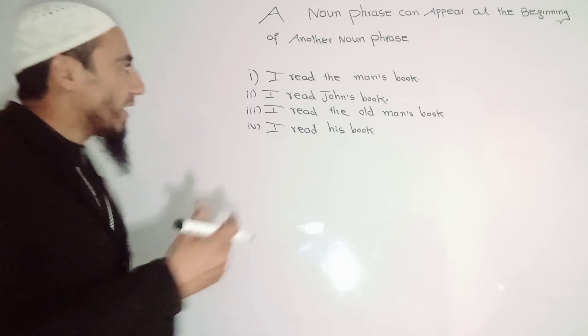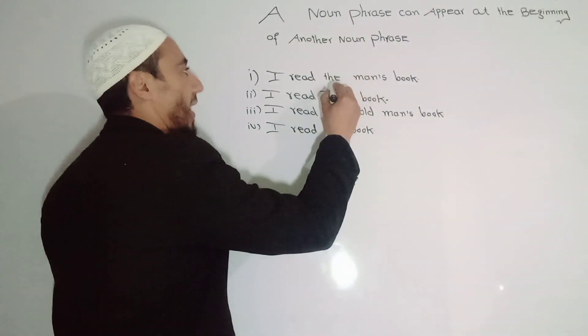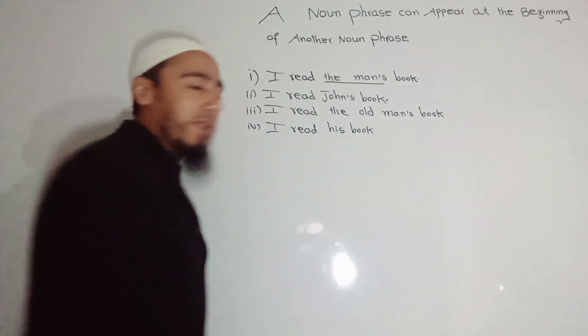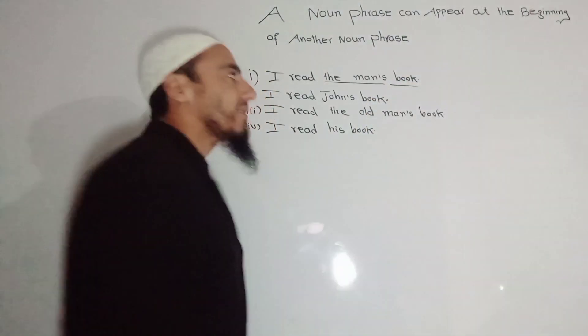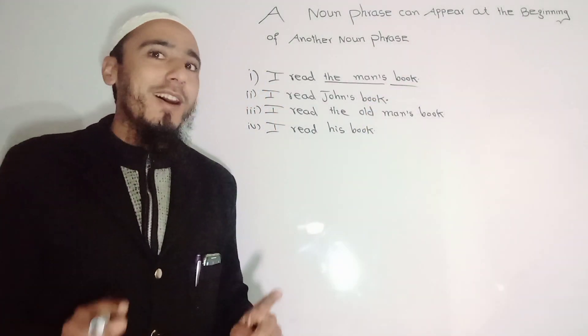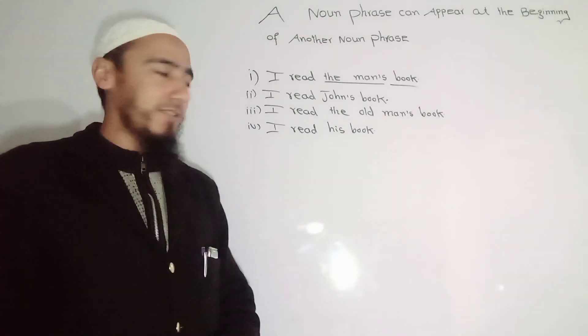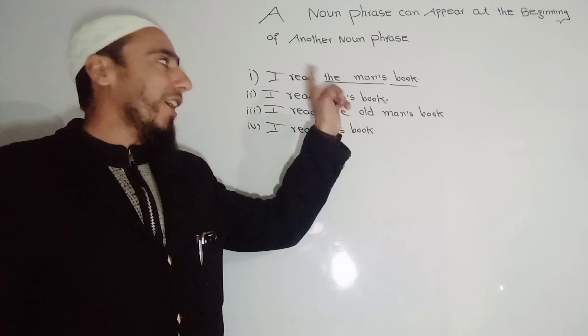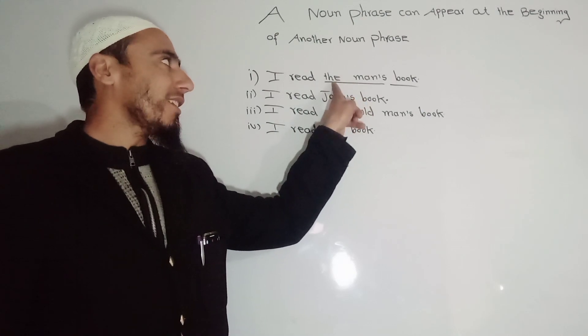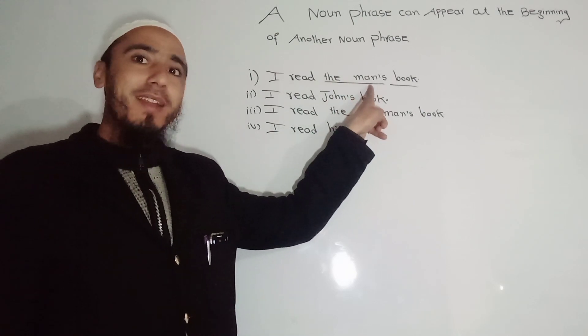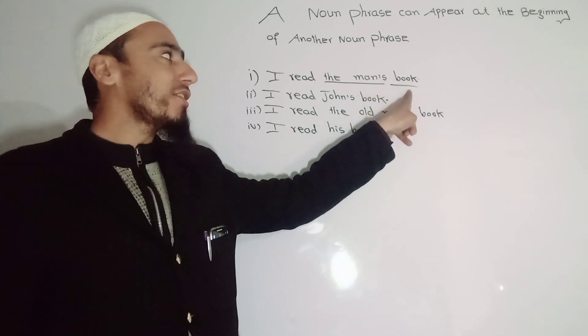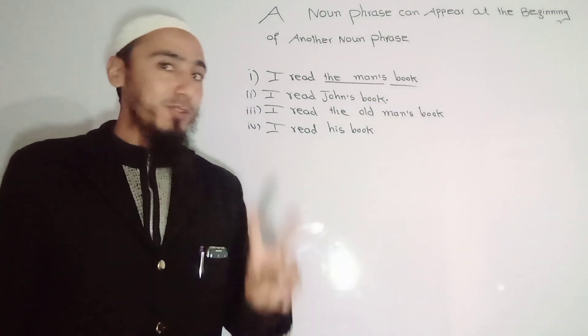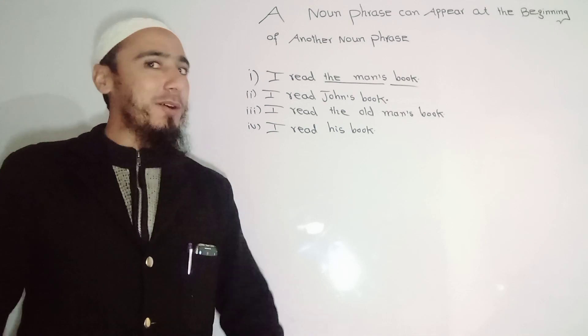And how is it? Like you see, I read the man's - this is one phrase. And another is book - this is another phrase. So there are two phrases in the sentence. Here you see the noun phrase starts with the article 'the,' and then 'man' which is a noun, and then there is another noun that is 'book.' So two phrases are there.